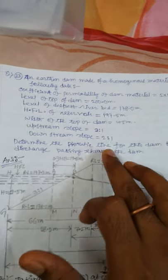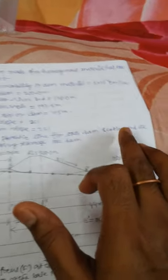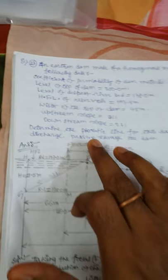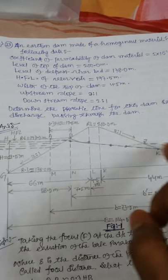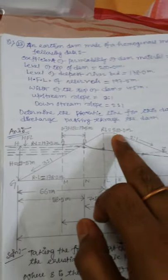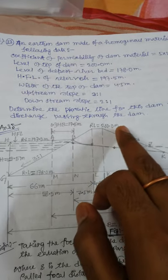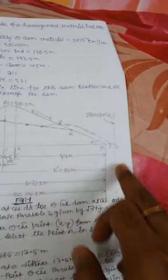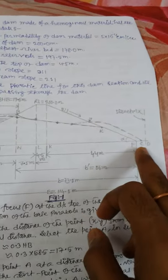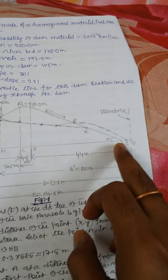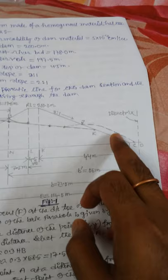Determine the phreatic line for this dam section and the discharge passing through the dam. So this is the dam, Arden dam. This is called phreatic line. This is RL 200, 200.0 meter. Directrix XCD, phreatic line, FCD line, C2, alpha.